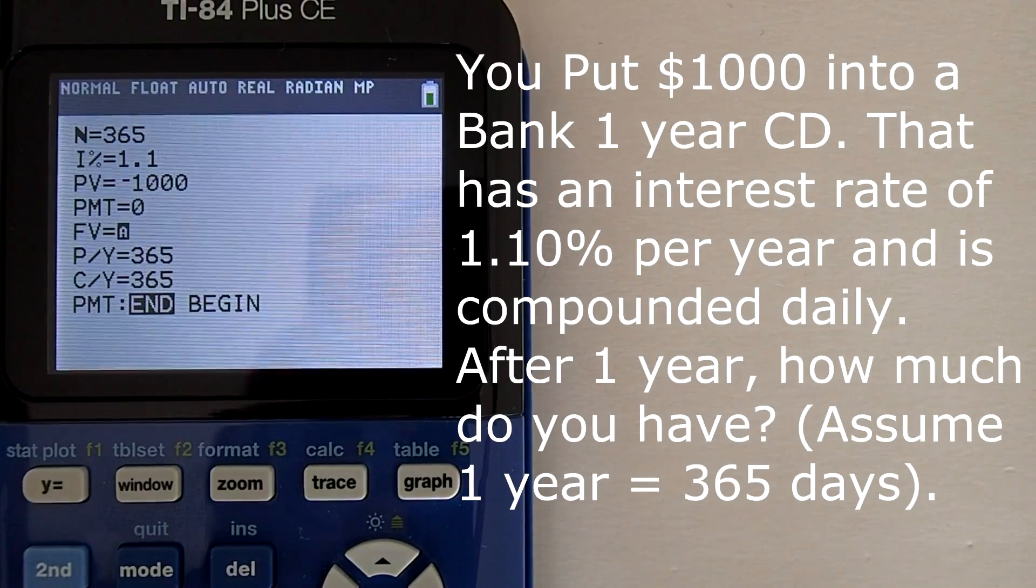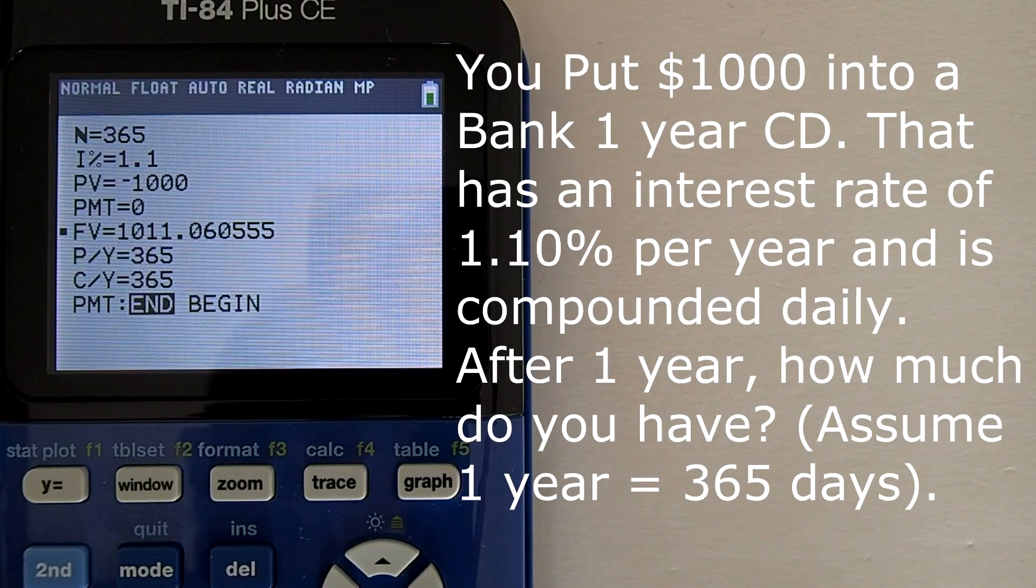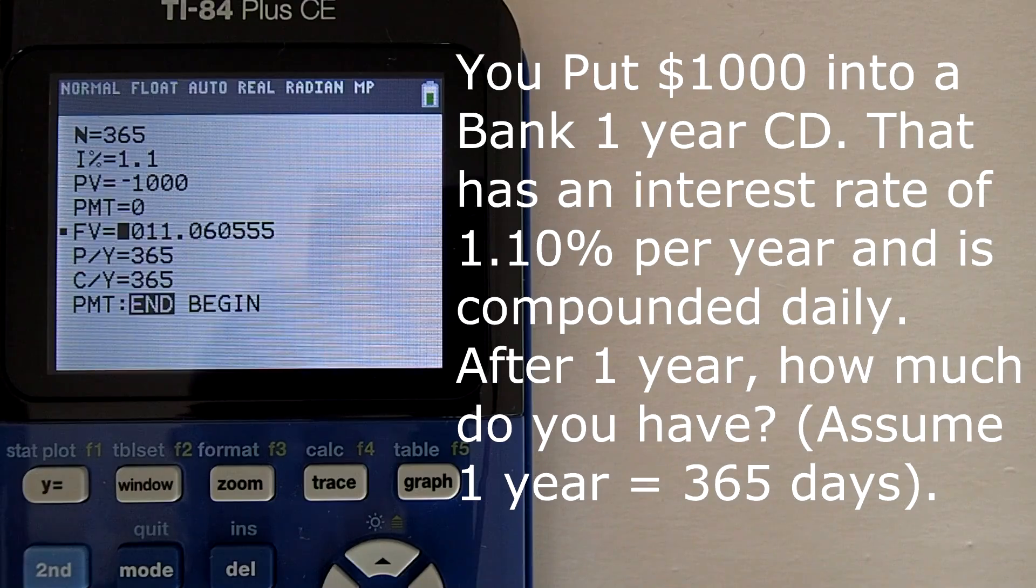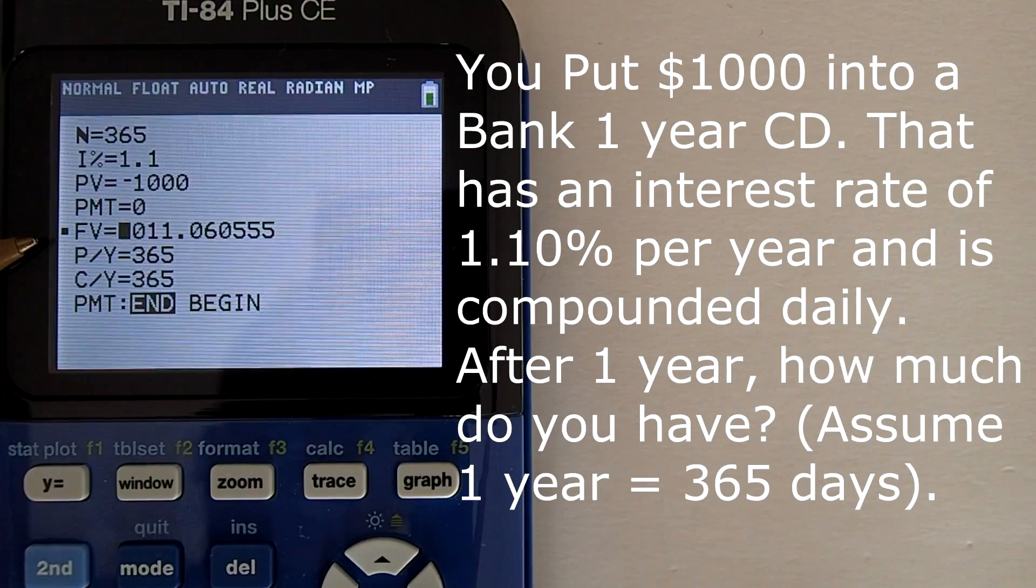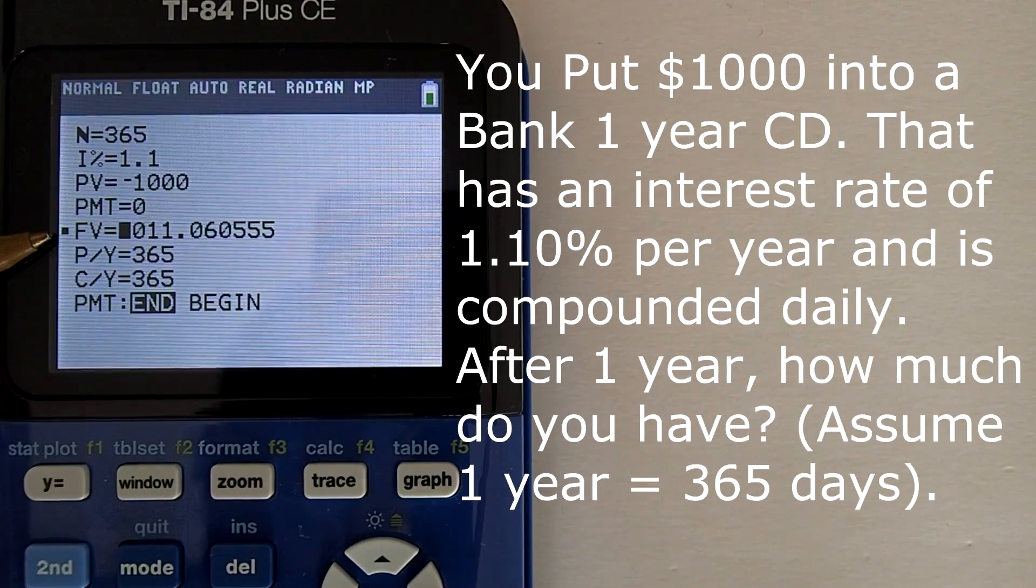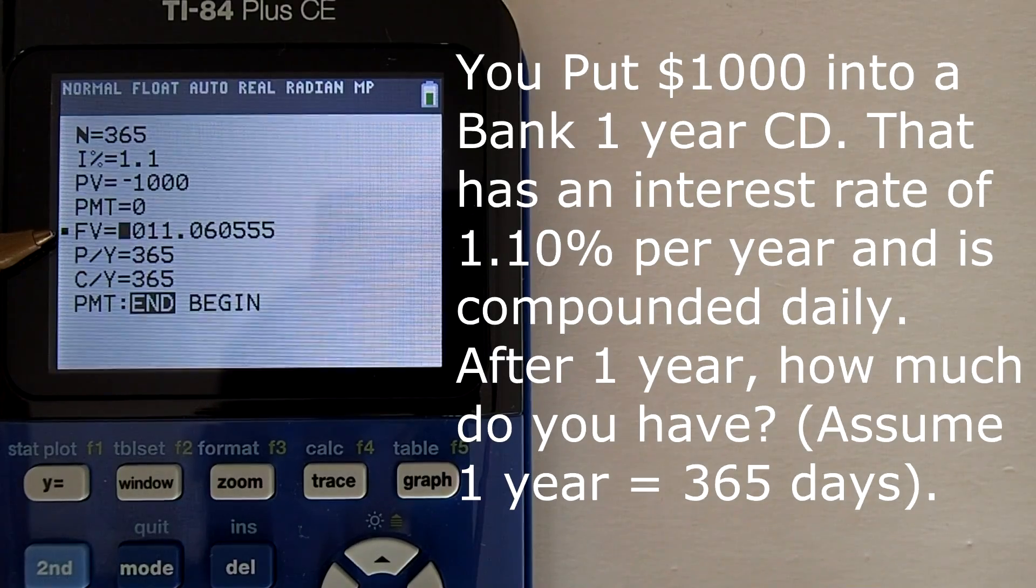And there is our answer. After one year, we will have $1,011.06 in our bank CD. Do you see that little black square next to the FV? That means that FV is the variable that we just calculated.